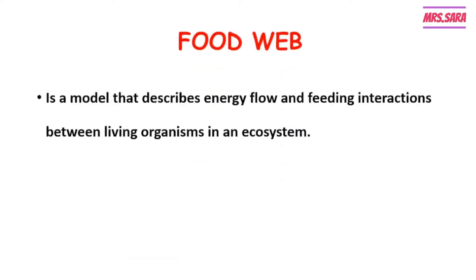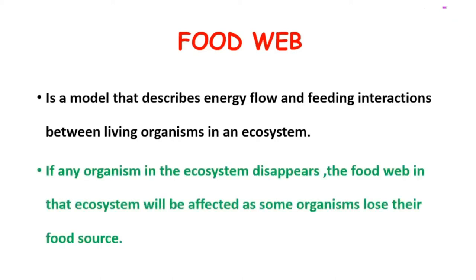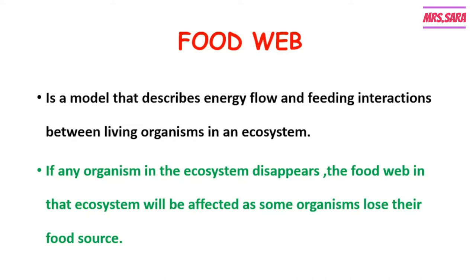A food web is a model that describes the energy flow and feeding interactions between living organisms in the ecosystem. If any organism in the ecosystem disappears — if we can't find that organism anymore — the food web in that ecosystem will be affected, because some organisms will lose their food source. So the ecosystem will be affected, and each organism in the ecosystem is important for the food web to continue.